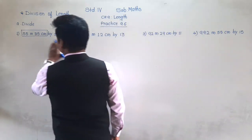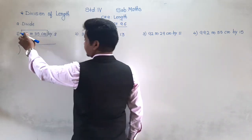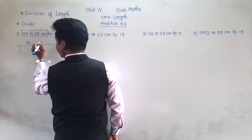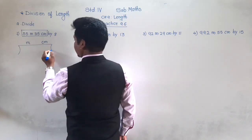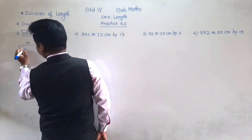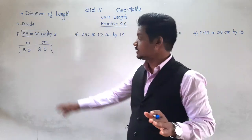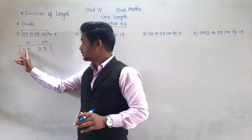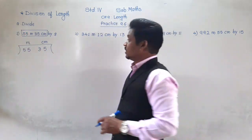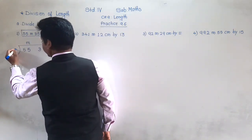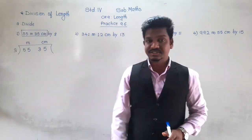Let us now divide. The length is given in meter and centimeter, so I am writing here meter and here centimeter. Below meter we write 55, and below centimeter we write 35. We divide by 9, so 9 is the divisor written here. We divide as usual, with a little change I will tell you.